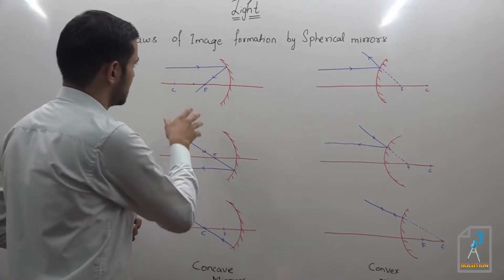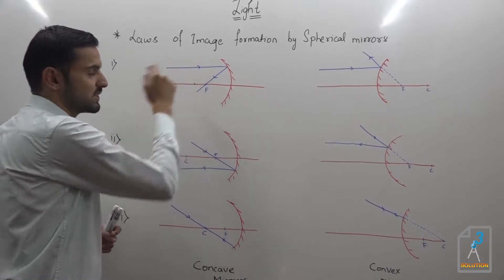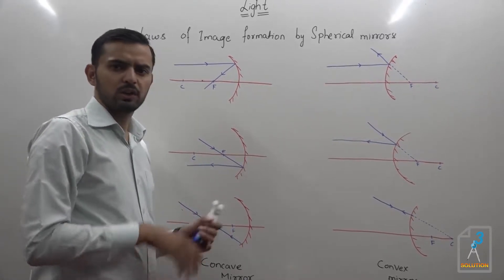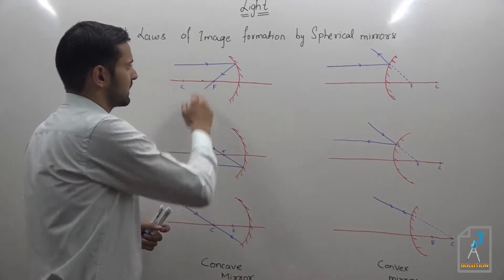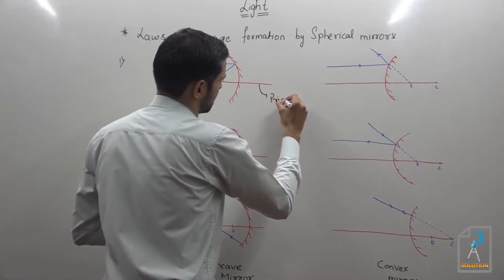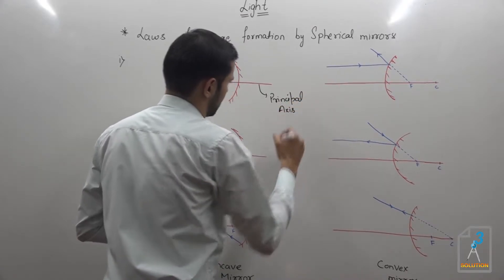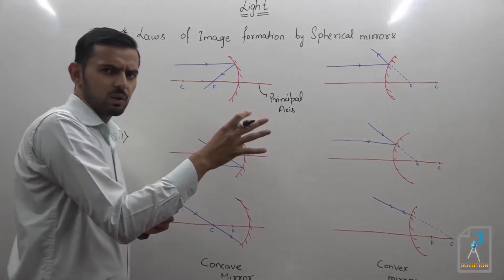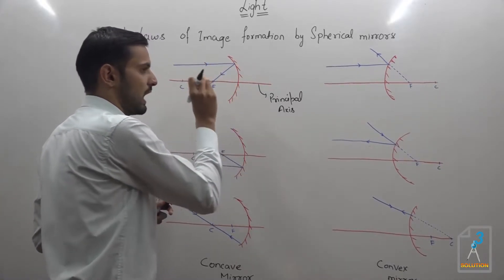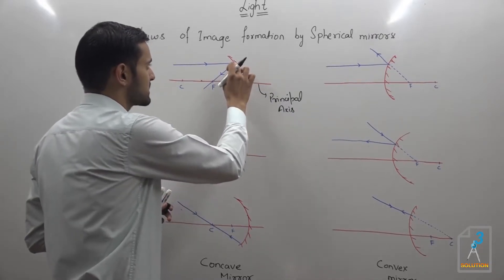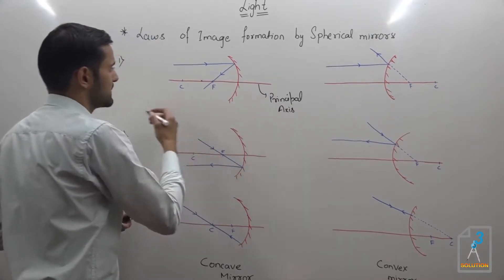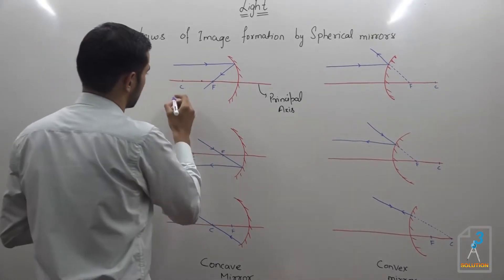The first law: we have a parallel incident ray. When we talk about basic terms, you have an incident ray and a reflected ray. A ray of light coming parallel to the principal axis, after incidenting on the concave mirror, converges towards a point on the principal axis — that point is called the focus.